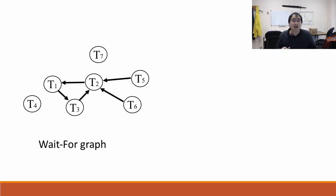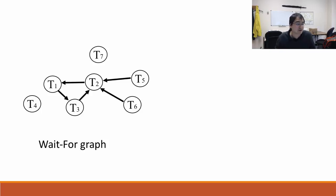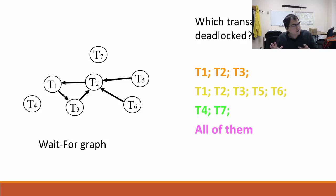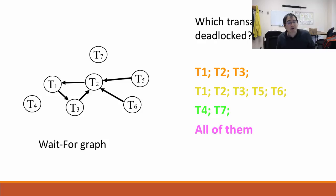Here is a wait-for graph with transactions 1 through 7, with arrows showing which transaction is waiting for others. Multiple choice question: which of these transactions are deadlocked? Transactions 4 and 7 are not deadlocked — they're not waiting on anybody, they're free to proceed. However, there is a deadlock cycle: T1 is waiting for T3, T3 is waiting for T2, T2 is waiting for T1. We have a deadlock cycle.